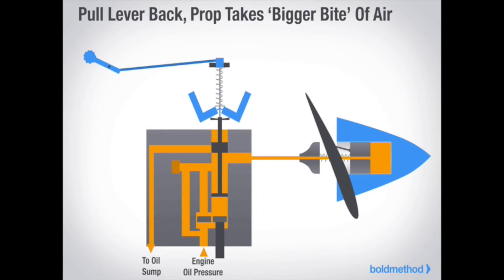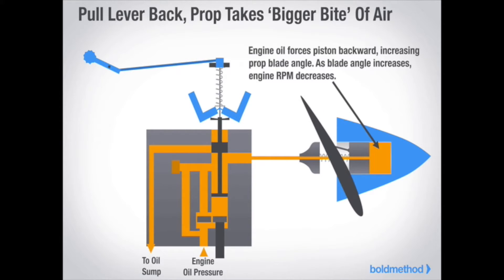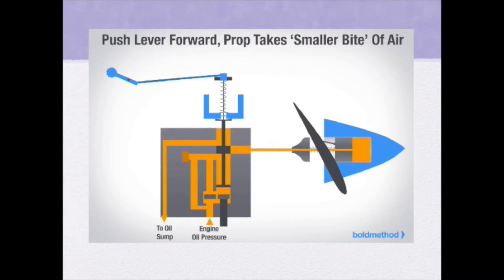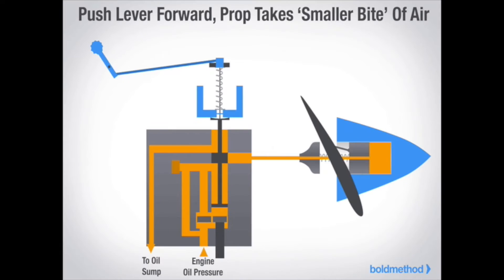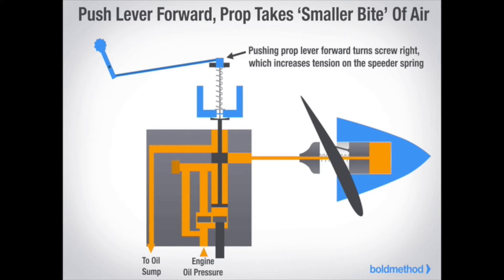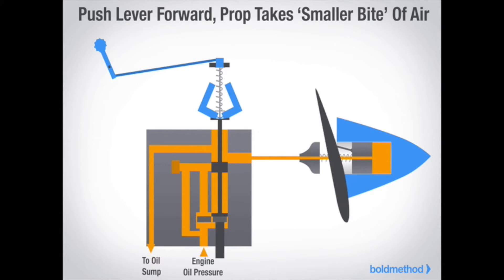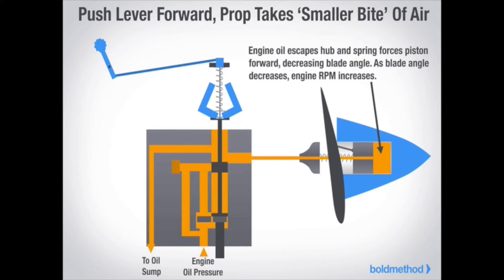So how do you use a constant speed prop on a flight? What's really happening is that you're increasing the angle of attack of the propeller, and in turn, increasing the torque required of the engine to swing the propeller around. Moving the propeller lever forward gives you more instantaneous power, because the engine doesn't need to work as hard to turn the propeller.